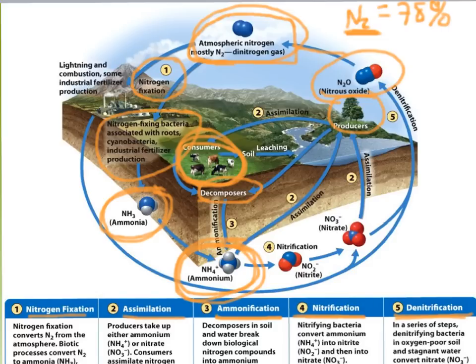One important thing I forgot: not only do bacteria fix nitrogen, but industry also fixes nitrogen from the atmosphere to make nitrogen fertilizers, which takes a lot of energy. Lightning also fixes a large amount of atmospheric nitrogen that then rains down to the earth, and plants can use that fixed nitrogen as well — in fact, lightning is very important in this process. That is basically the general idea behind the nitrogen cycle, and it's very important for living things to have the basic building blocks of life.